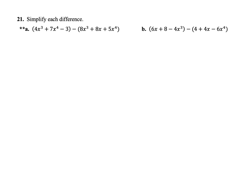In number 21, we're going to switch over to subtraction. Notice there's a minus sign in the middle of the two parentheses. When you see a subtraction, we're going to change it to an addition problem by distributing the negative 1 to the second polynomial — that's the one after the minus, because it's like you're distributing a negative 1. And when you multiply numbers by negative 1, all of their signs are going to flip. So negative numbers will change to positive and positive numbers will change to negative. So I'm just going to rewrite this second expression now as negative 8x cubed minus 8x minus 5x to the fourth. And now that we've distributed the negative 1, it's an addition problem.